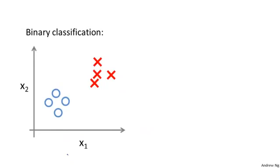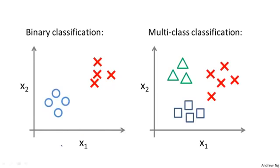Whereas previously, for a binary classification problem, our datasets look like this. For a multi-class classification problem, our datasets may look like this, where here I'm using three different symbols to represent our three classes.